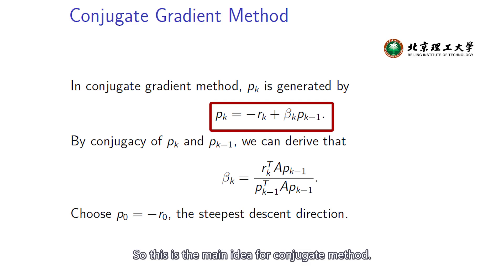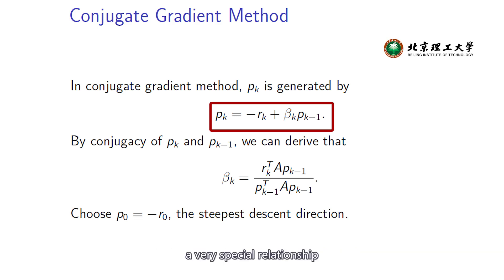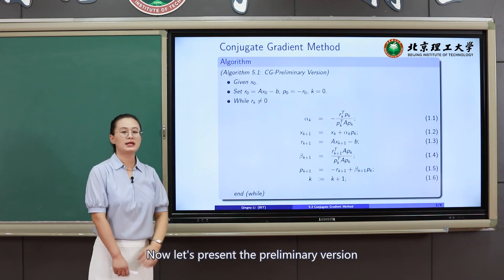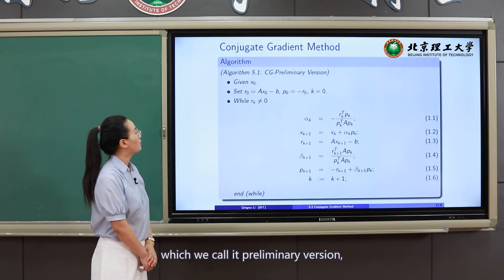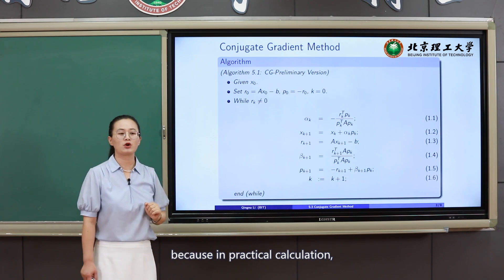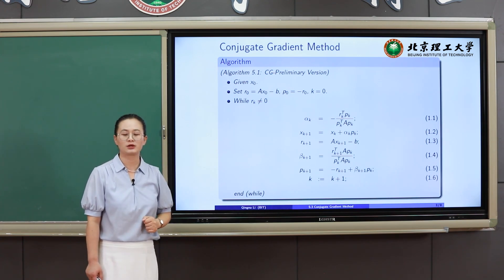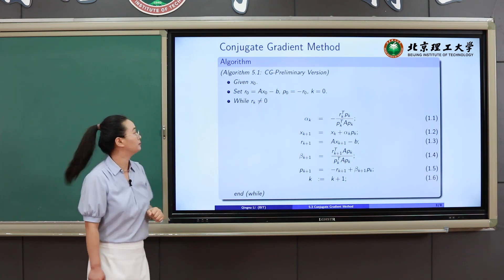This is the main idea for the conjugate gradient method. The difference between the conjugate gradient method and the conjugate direction method is that the conjugate gradient method specifies a very special relationship to generate the conjugate directions. Now let's present the preliminary version of the conjugate gradient method. We call it a preliminary version because in practical calculation, we do not use this version to implement the code — it's just a bridge to the practical version.